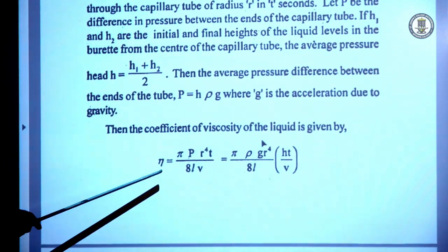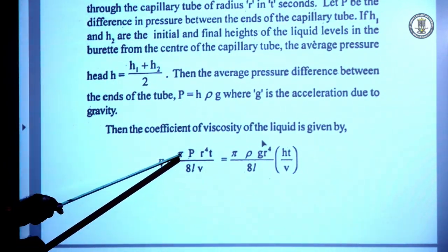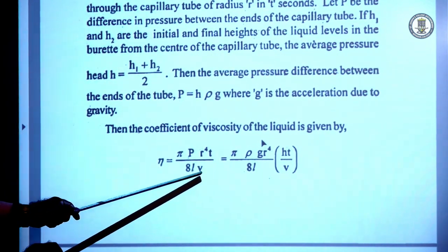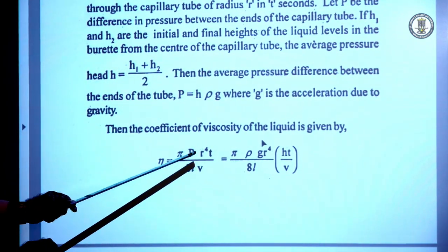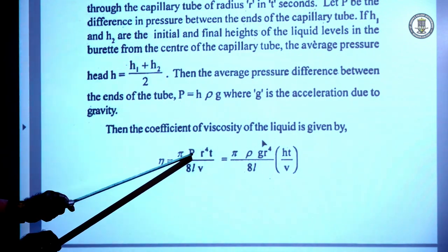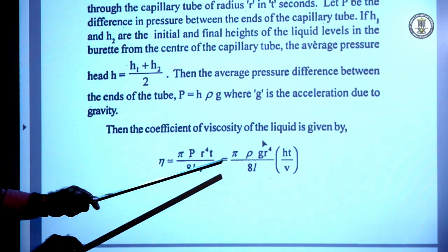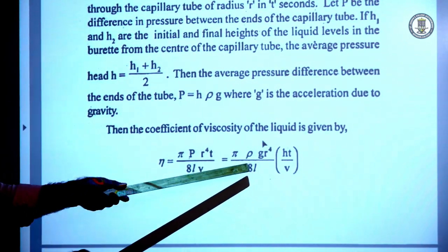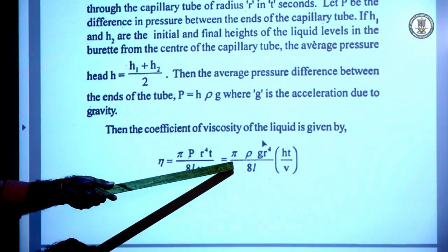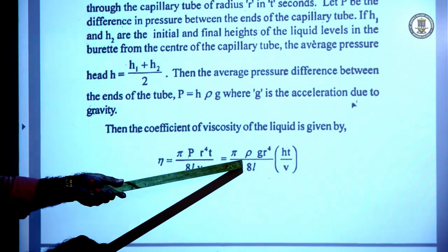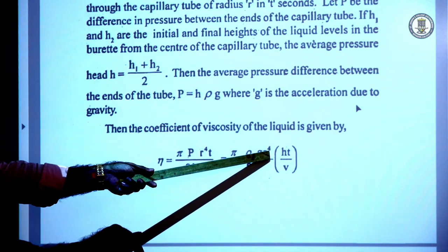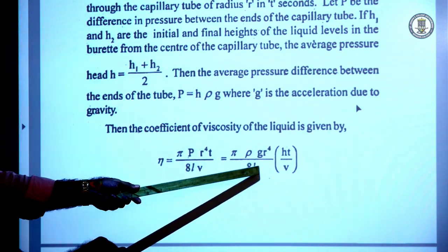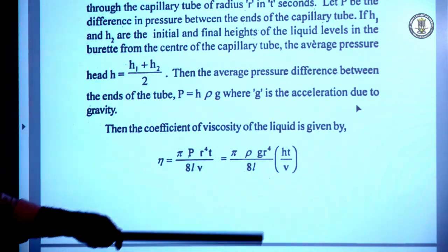The viscosity is calculated using the formula η = π·P·R⁴·T / (8·L·V). Instead of P, we substitute H·ρ·g, so the formula becomes η = π·ρ·g·R⁴ / (8·L) × (H·T / V).